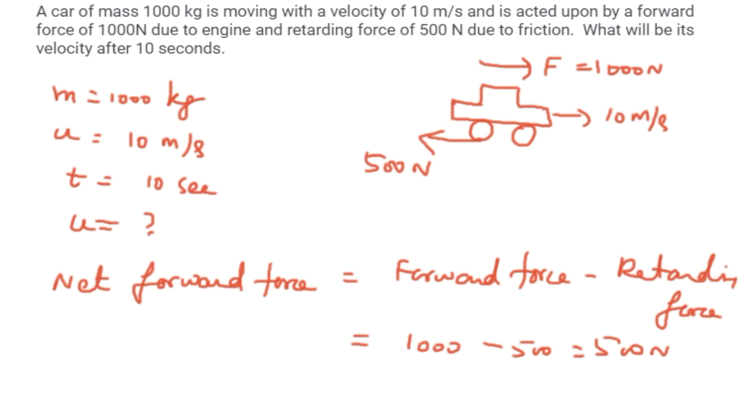We know from Newton's second law, acceleration is equal to force by mass. So here the force is equal to 500 and the mass is equal to 1000, which gives 0.5 meter per second squared.